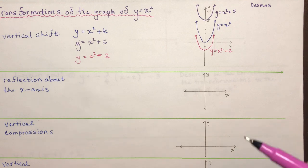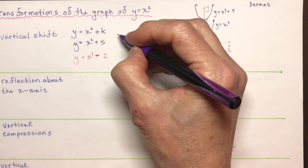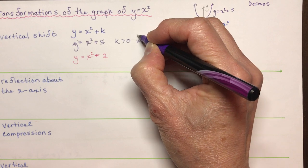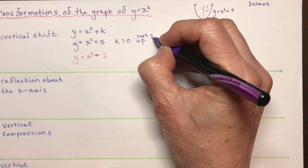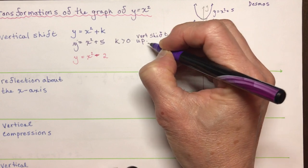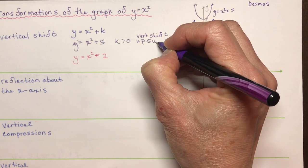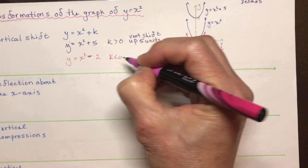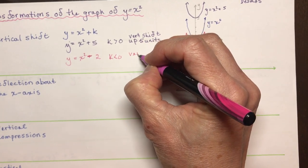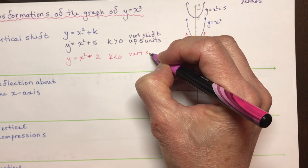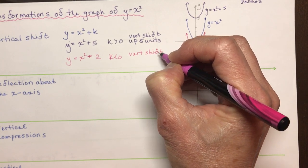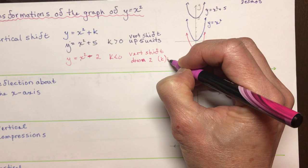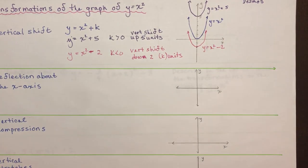If k is greater than 0, it's a vertical shift up — vertical shift up 5 units. If k is less than 0, it's a vertical shift down — down 2 units, or k units in general. So up or down, very very easy.